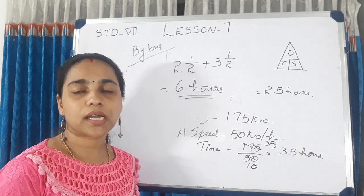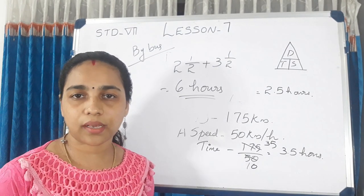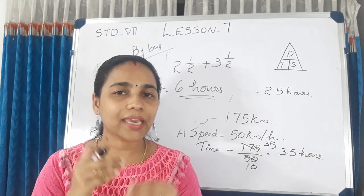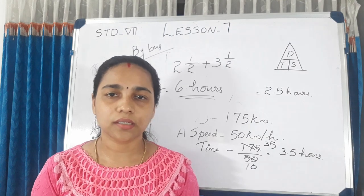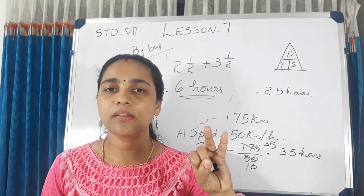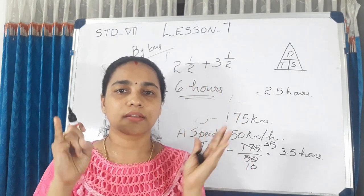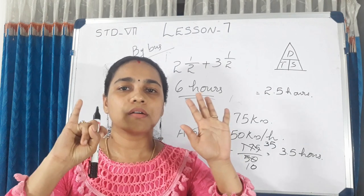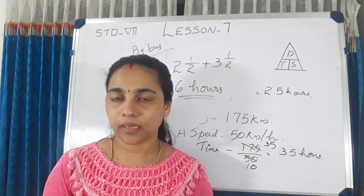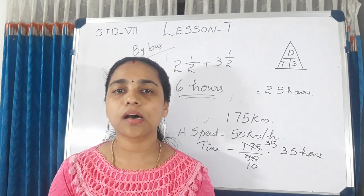Total travel time is 6 hours. She needs to arrive by 1 o'clock, so she should leave home at 7 o'clock in the morning. The time to start from home is 7 am.